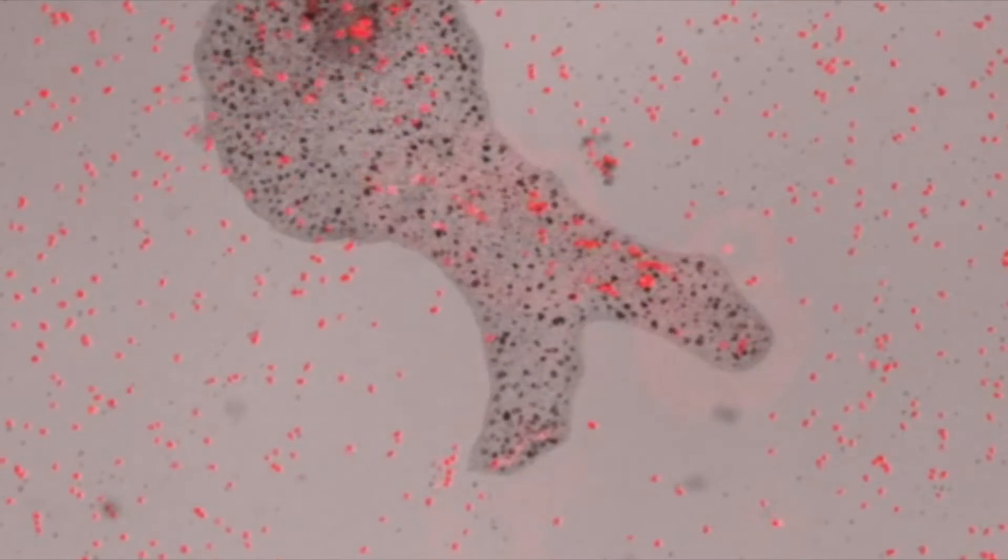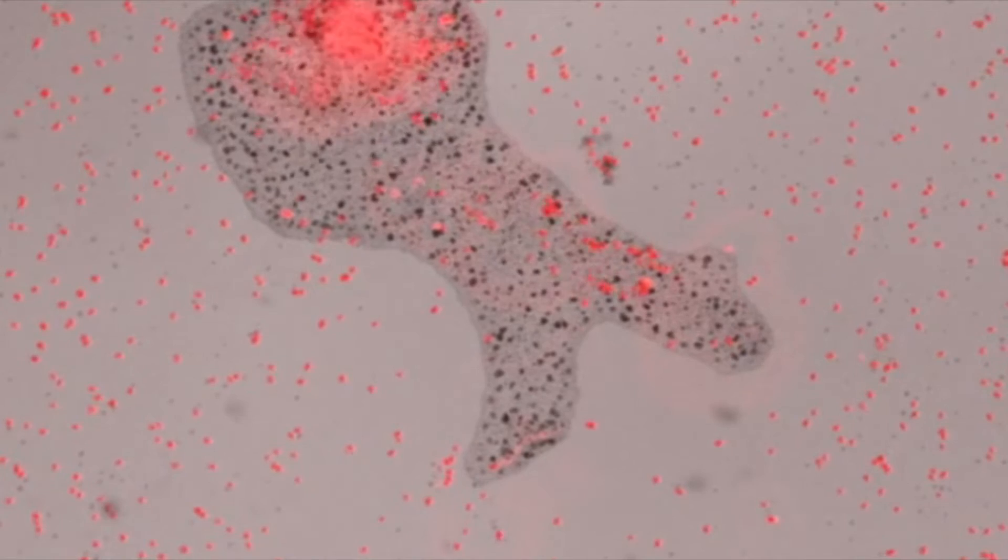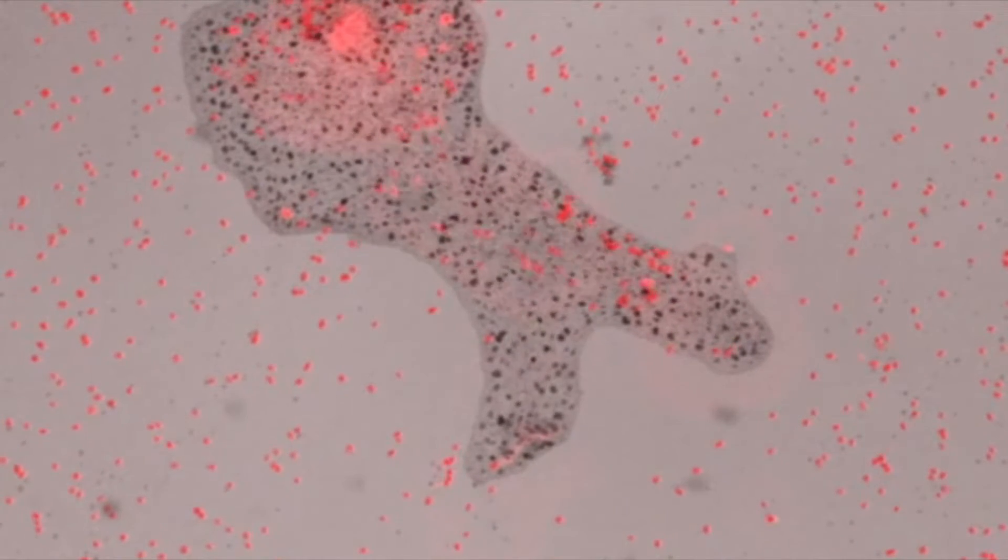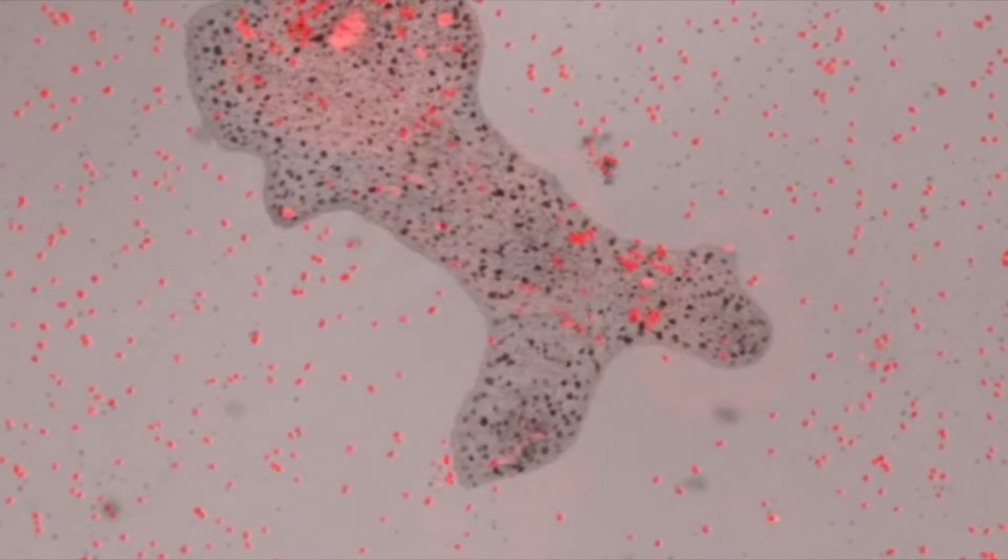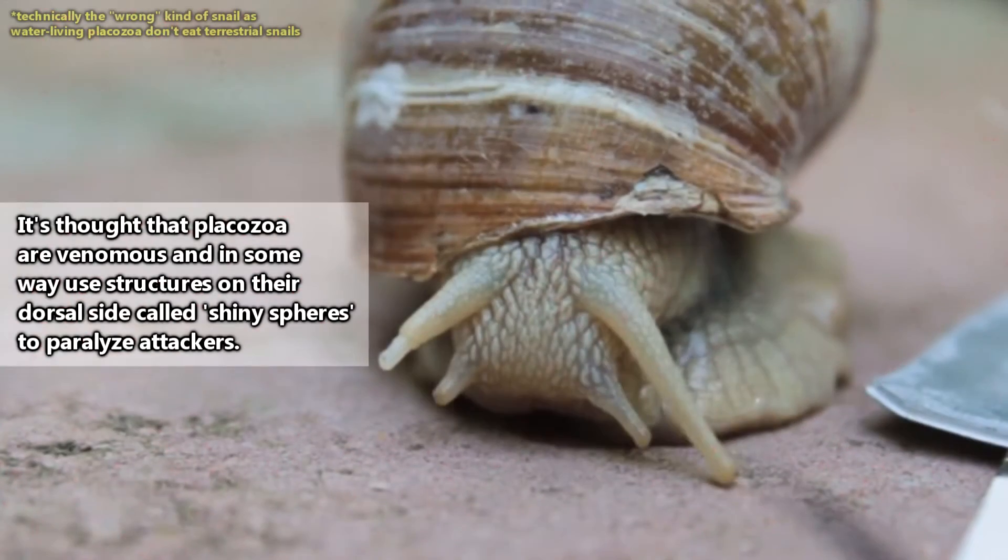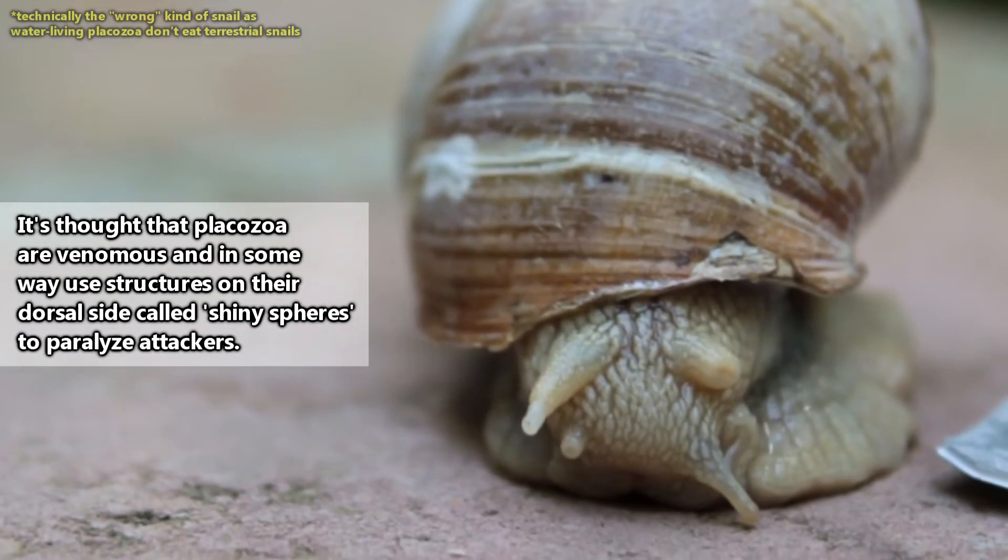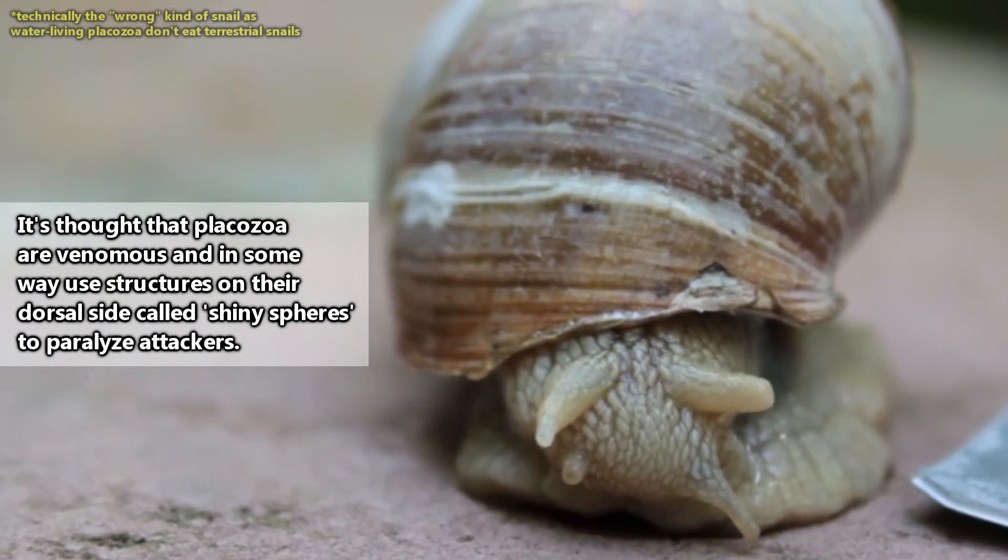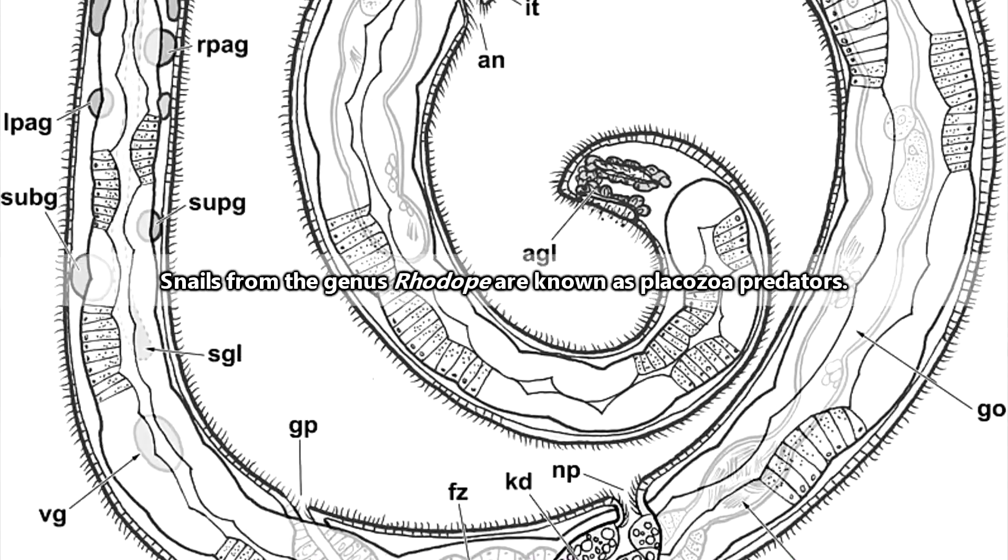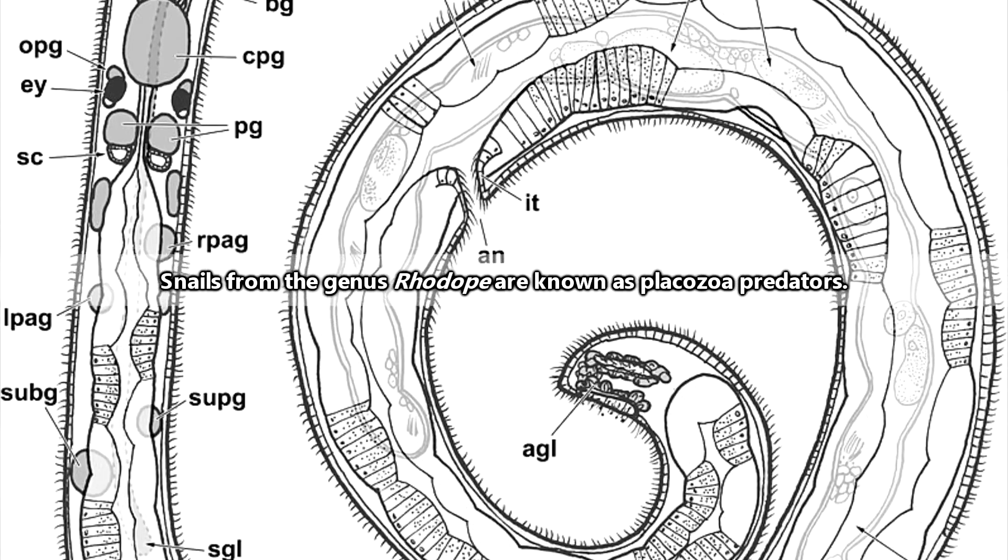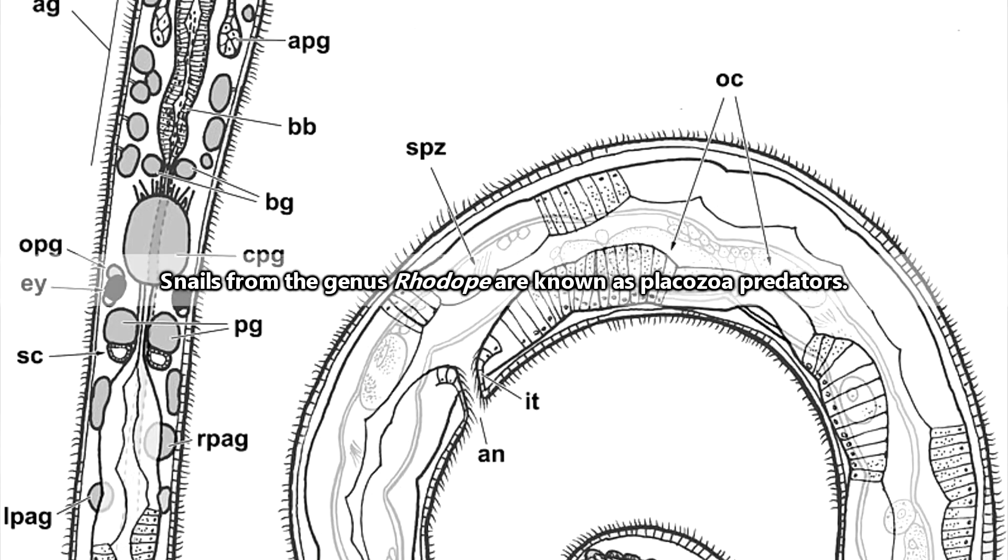They might seem like harmless sesame seed-sized specks, but they've been observed to pack quite the punch. Snails have been seen recoiling from placozoa after a brief touch. To a huge human, there's no threat. But for a small snail, it's a day-ruiner. Some animals are able to eat placozoa, however, and those are some species of snails and ribbon worms.